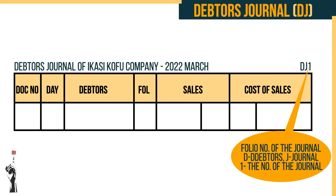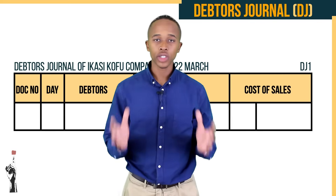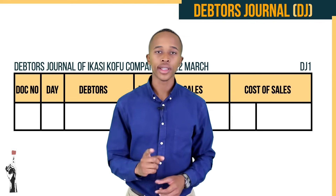The seventh and last column is DJ1 — debtor's journal number one. This is the folio number of the journal: D for debtors, J for journal, and 1 for the specific number of the journal. Let's run through the debtor's journal once again.